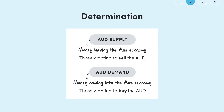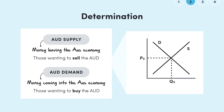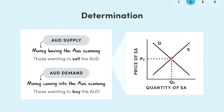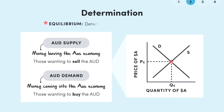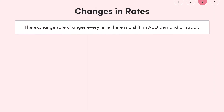Supply and demand determine the value of the Australian dollar in the same way as for any good or service. We model Australian dollar supply and demand on a diagram with the price of the Australian dollar on the vertical axis and quantity of Australian dollars on the horizontal axis. The point where the supply and demand graphs meet — the equilibrium — determines the value of the exchange rate. The exchange rate changes any time there is a shift in Australian dollar demand or supply.